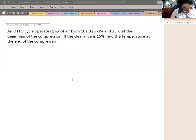Okay, we will solve this sample problem. An Otto cycle operates at 1 kg of air from 101.325 kPa, so it means atmospheric, and 25 degrees at the beginning of the compression.